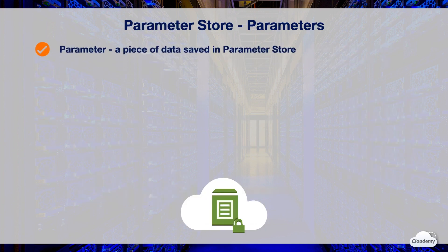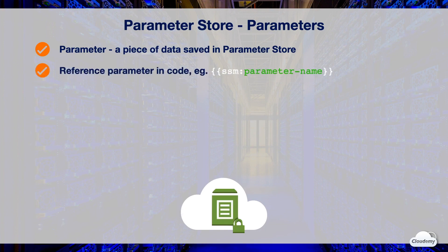A parameter is a piece of data saved in Parameter Store, such as a block of text, a list of names, a password, an AMI ID, or a license key. You can securely reference the parameter in your application code, commands, and SSM documents using double curly braces, the word SSM, and the parameter name you want to reference.